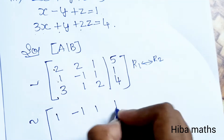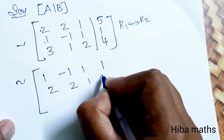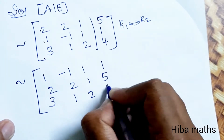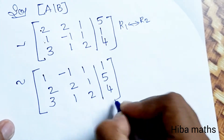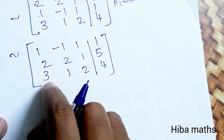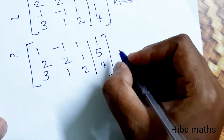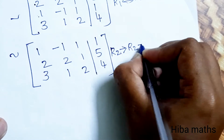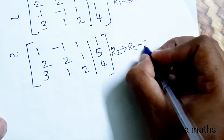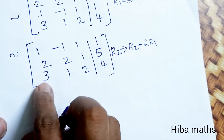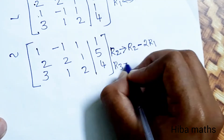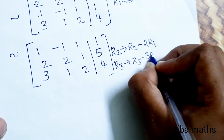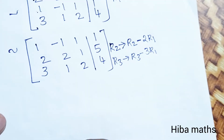After R1 ↔ R2, the matrix becomes: row 1: 1, -1, 1, 1; row 2: 2, 2, 1, 5; row 3: 3, 1, 2, 4. The second row pivot is 2 and third row pivot is 3, so R2 changes to R2 minus 2 times R1, and R3 changes to R3 minus 3 times R1.